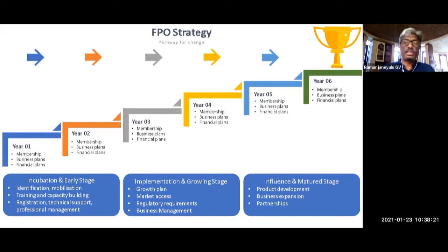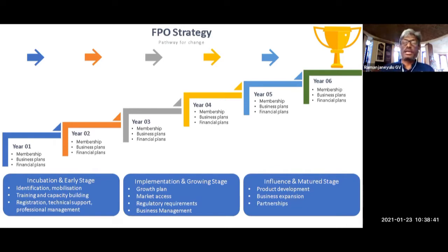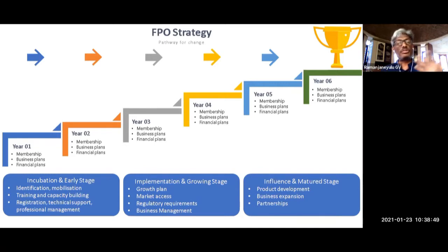The second stage is about having a growth plan. Having come together and established systems, how do we grow from here? What are the opportunities available, what kind of market access is required? Do we sell in the local market, do we collectivize and process and sell, or do we sell raw material — depending on local market needs?